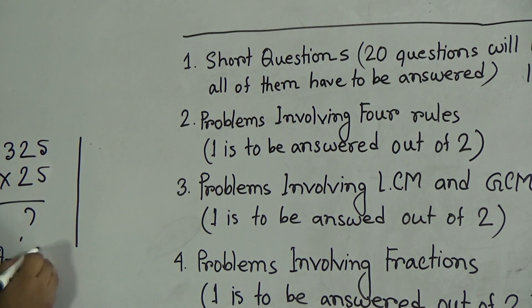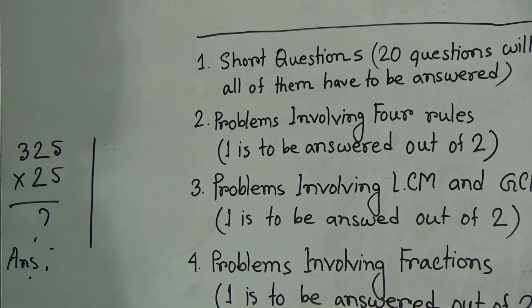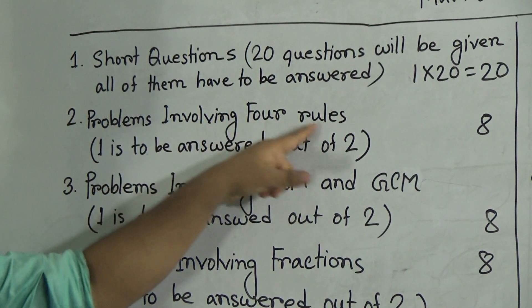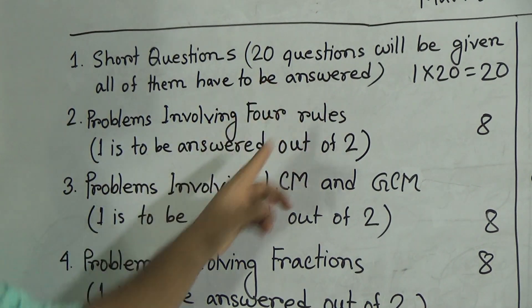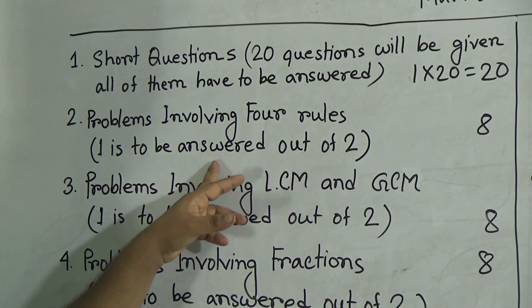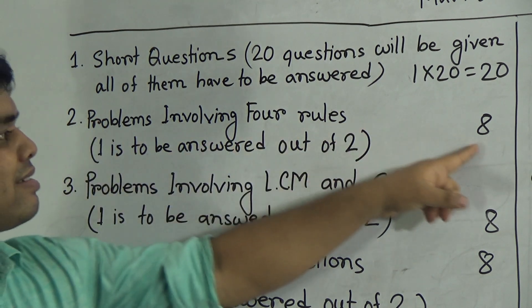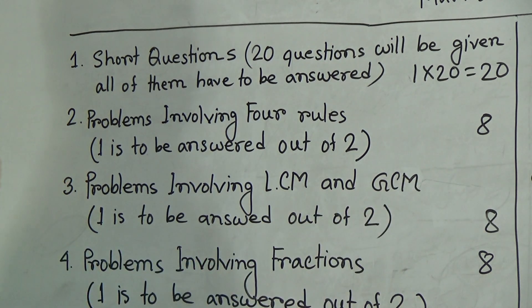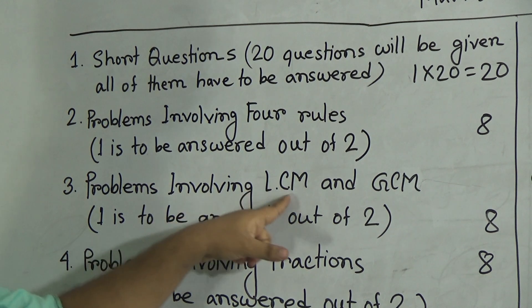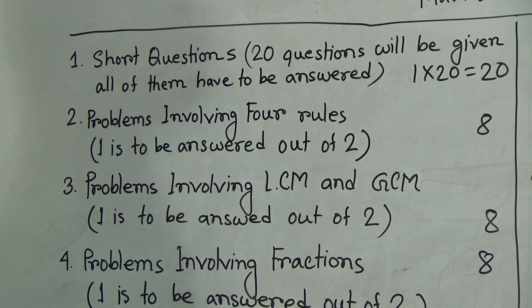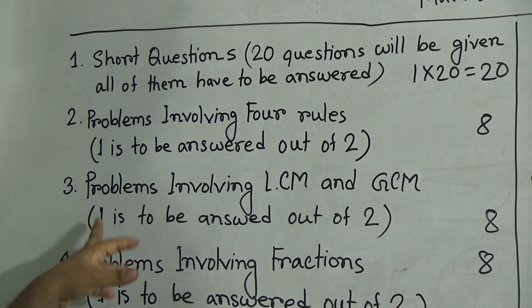Question number 2 is problems involving four operations, which is from Chapter 3. Two questions will be given and you have to answer one question out of two. This one question carries 8 marks. Question number 3 is problems involving LCM and GCM, from Chapter 5. You have to answer one question out of two, and this question also carries 8 marks.